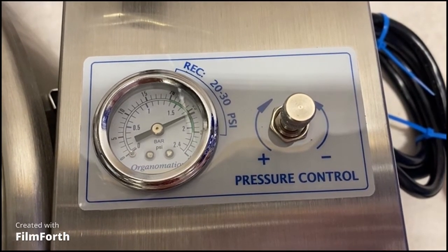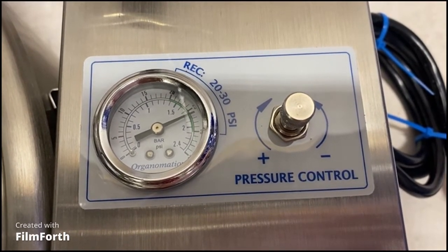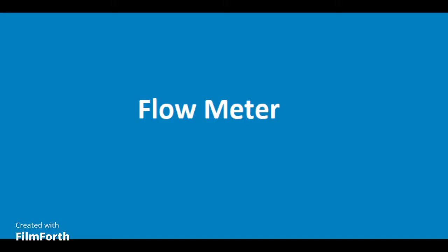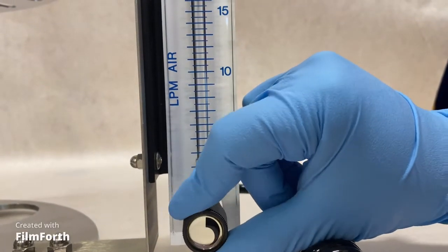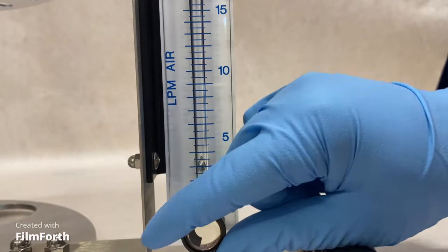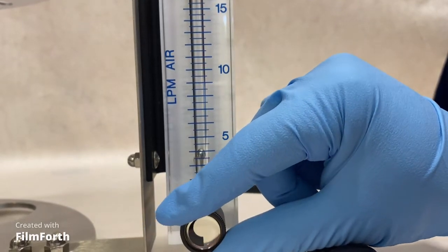If it doesn't respond, the pressure regulator or gauge most likely needs to be replaced. To check the flow meter, turn on the gas switch and rotate the flow meter dial counterclockwise. This should open the valve, causing the ball to respond.